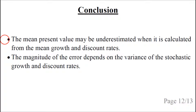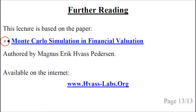The conclusion is that the mean present value may be underestimated when it is calculated from the mean growth and discount rates. The magnitude of the error depends on the variance of the stochastic growth and discount rates. This talk was based on a paper which can be found on a website, with the link also provided below the video.